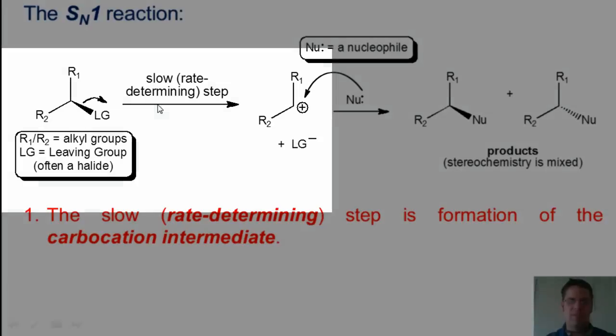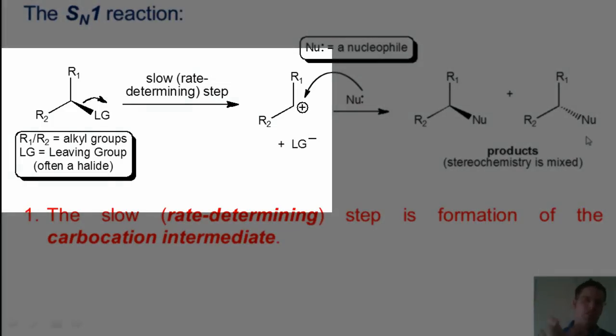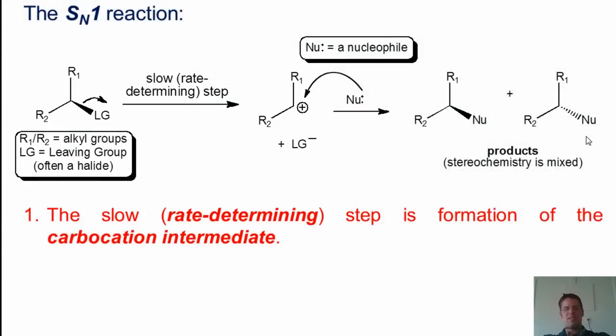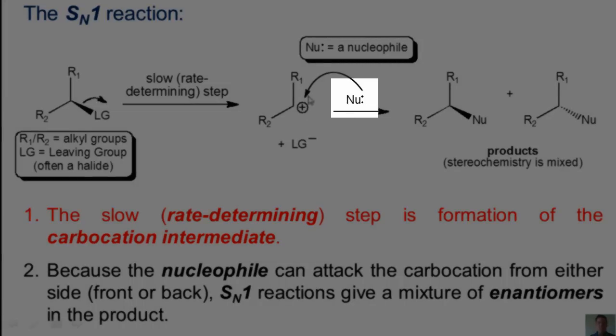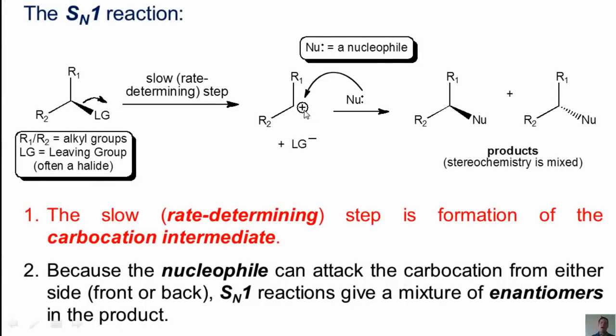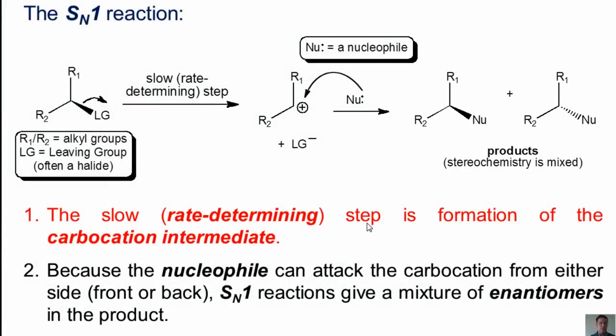Now, I have to point out two things about the SN1 reaction. First, the slow step that I've labeled here, which is the first step, is the formation of the carbocation. We also say, and are correct in saying, this is the rate determining step. That is, it's the slowest step in this entire process. Thus, the speed of this first step, which is very slow, is the speed that determines the overall rate of the entire process. Two, because the nucleophile, this guy right here, can attack this positively charged carbocation center from either side, the front side or the back side, three-dimensionally speaking, SN1 reactions give mixtures of both enantiomers in the product.